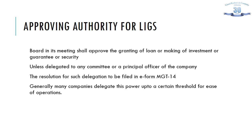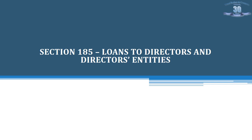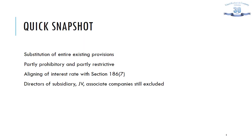Generally, many companies delegate this power up to a certain threshold for ease of business operations. Now we come to Section 185, which used to be a very controversial section, previously prohibiting the giving of loans to directors and entities in which the director is interested. Under the Companies Amendment Act 2017, the entire section has been substituted to make it partly prohibitory and partly restrictive.